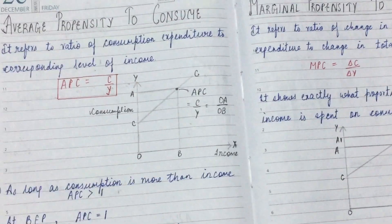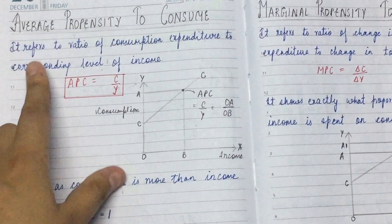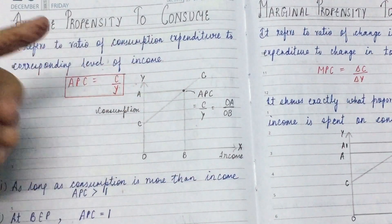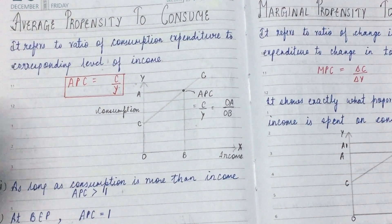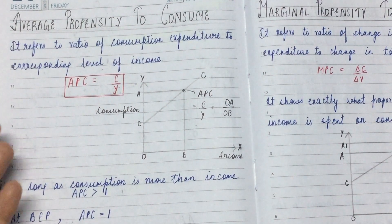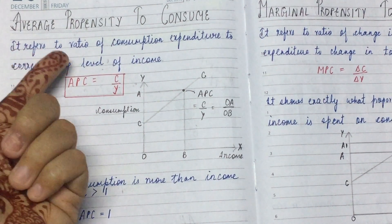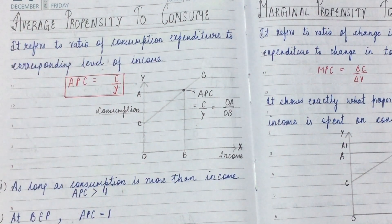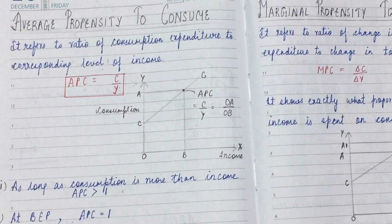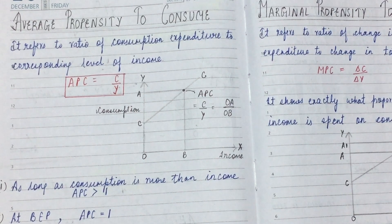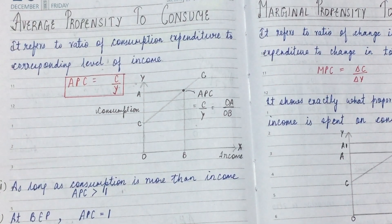First, we come to the meaning. Average Propensity to Consume, or APC — which we have read about in the previous video on consumption function — is the first part. What does this mean? It refers to the ratio of consumption expenditure to the corresponding level of income. So, what is the ratio of consumption expenditure to income? That is the Average Propensity to Consume.